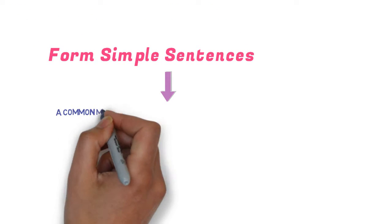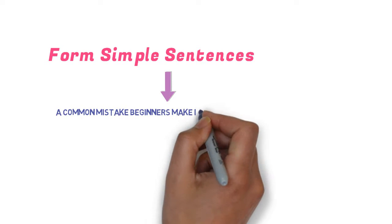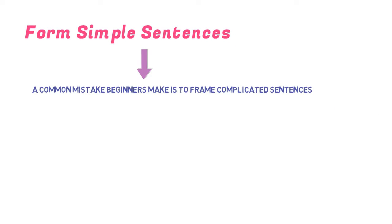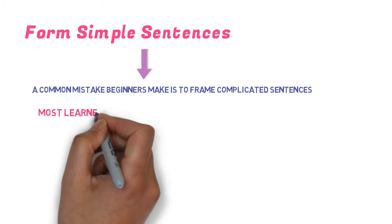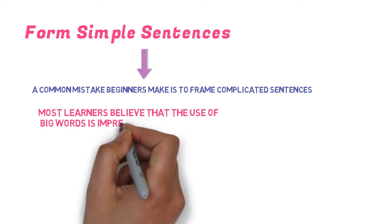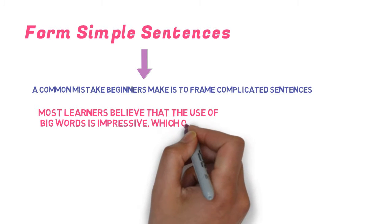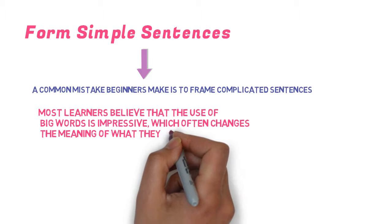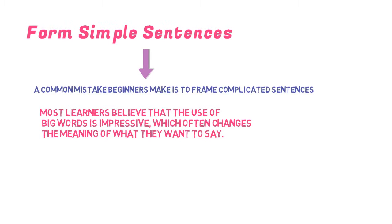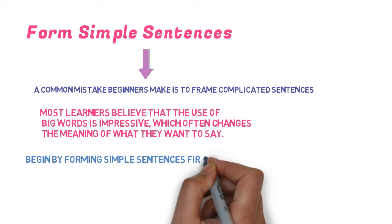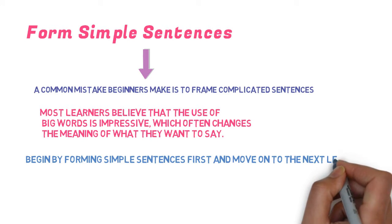Now, this is a very simple example — form a simple sentence. A common mistake beginners make is how to frame complicated sentences. The most important factor is that most learners believe that the use of very big or very impressive words changes the meaning, which they should not do. Begin by forming simple sentences and gradually move to the next level.